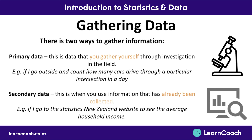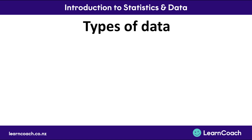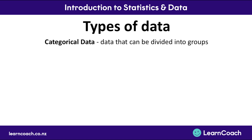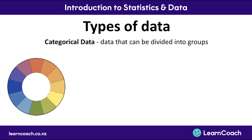There are three types of data. The first is categorical data, which is data that can be divided into groups. An example would be colours — they can be divided into distinct categories like red, green, blue, yellow, magenta, and burgundy. They are distinct categories.